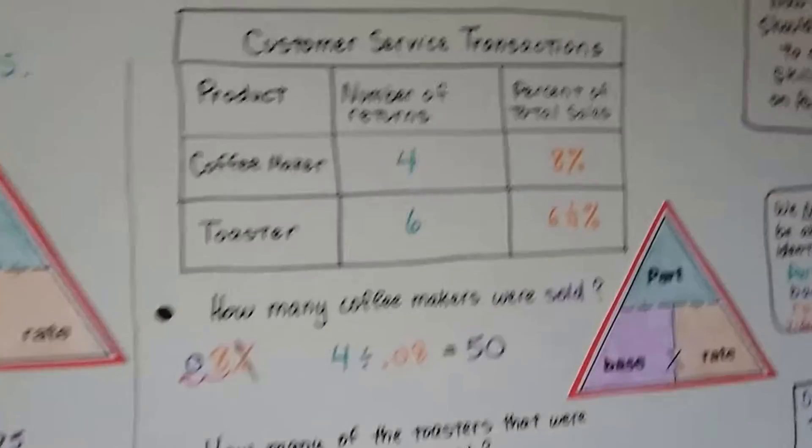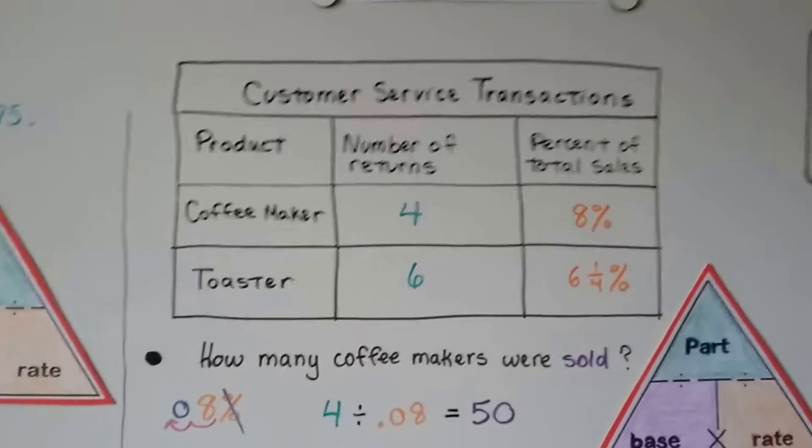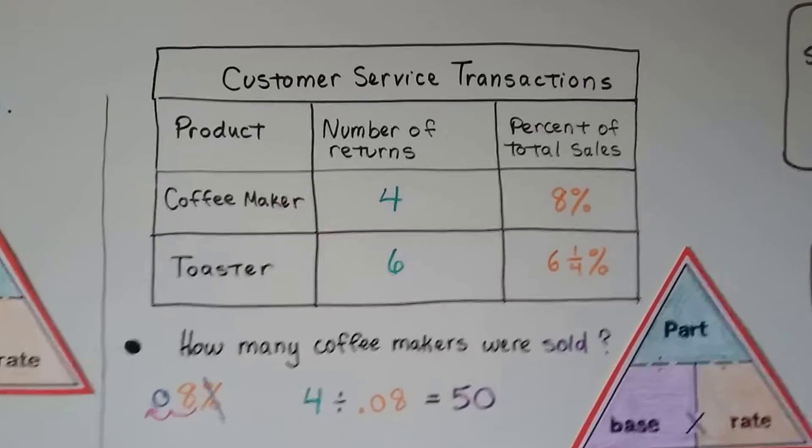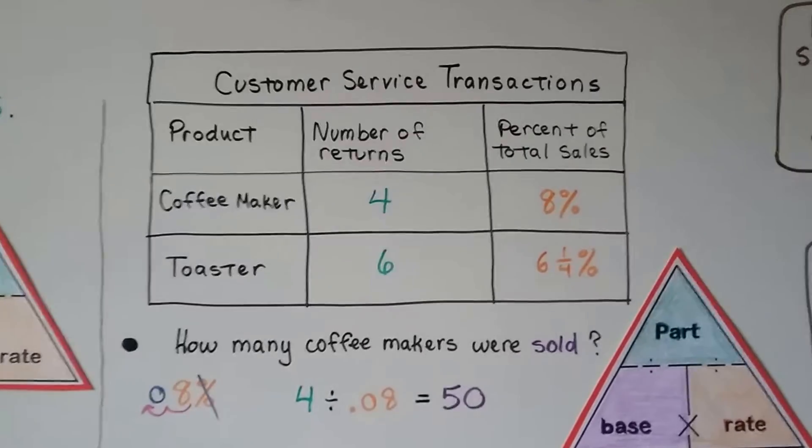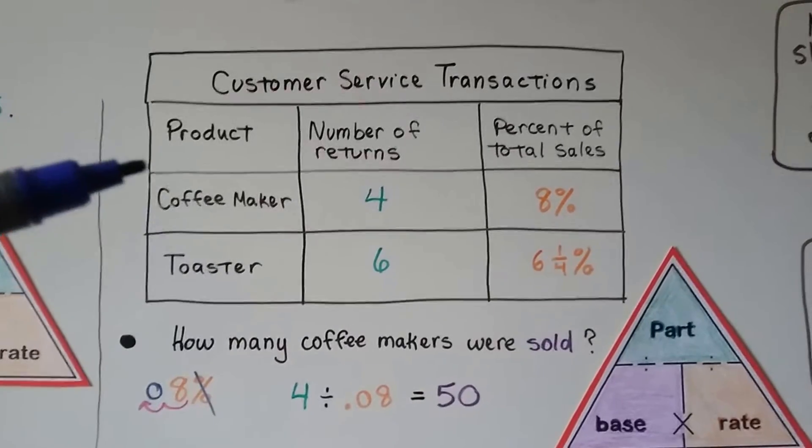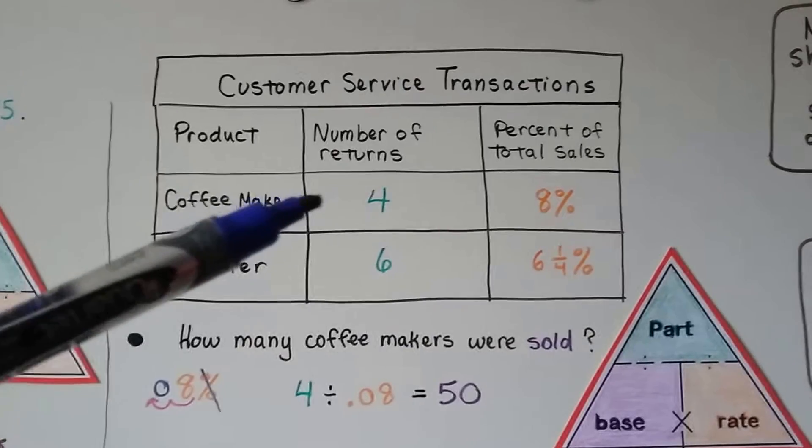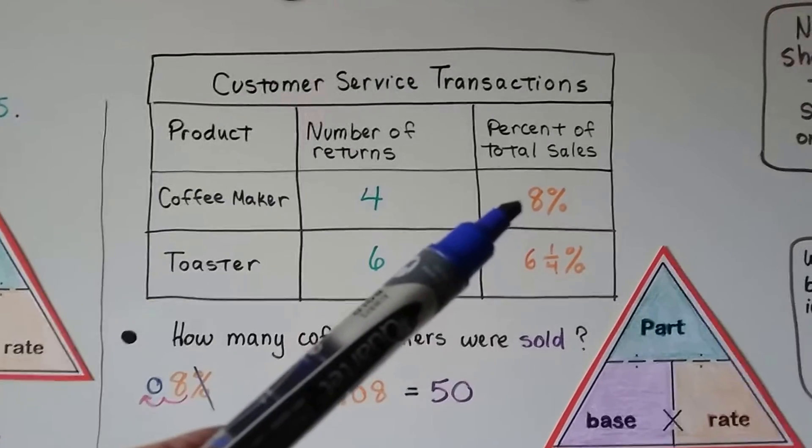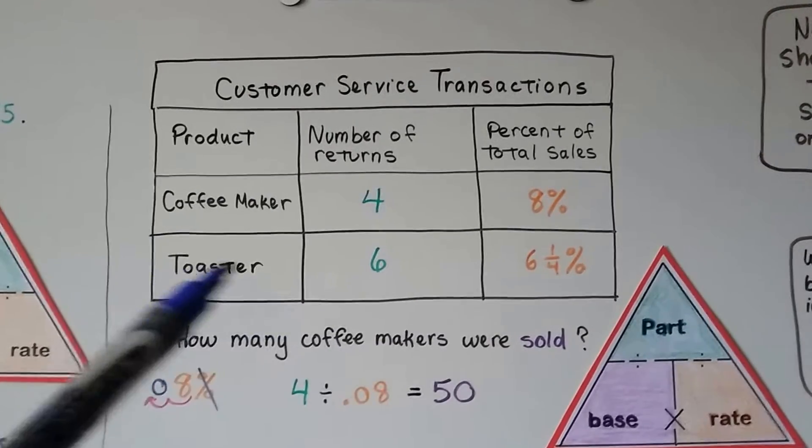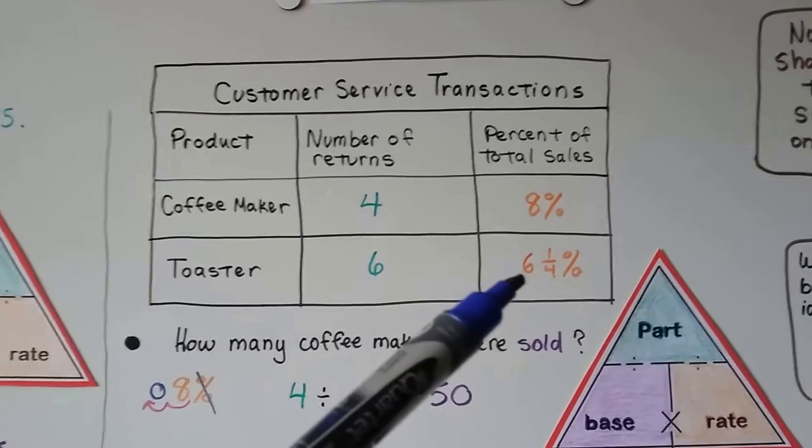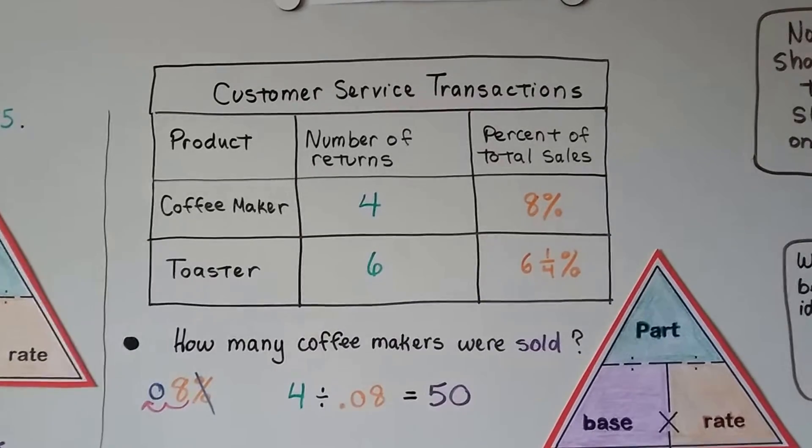In your skill focus, there's a table similar to this. So I'm going to show you what they expect of you. Here we have some customer service transactions and our products are a coffee maker and a toaster. The coffee maker had four returns. Those four returns were 8% of the total sales. The toaster had six returns, which was six and one-fourth percent of the total sales.